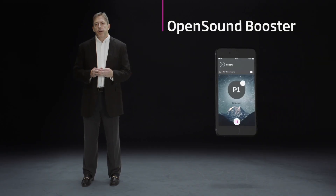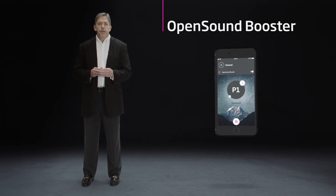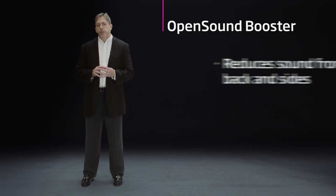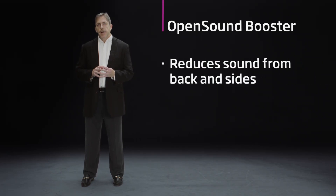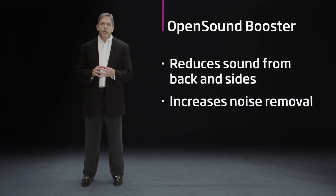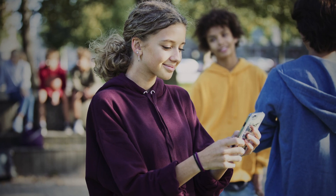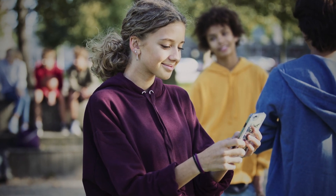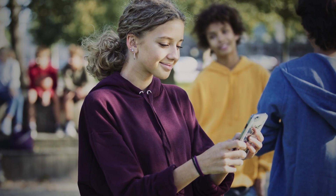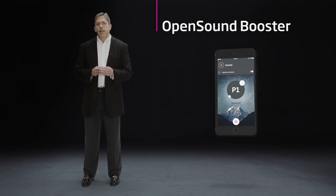For those situations, we created OpenSound Booster. OpenSound Booster is activated via a simple button push on the Oticon On app. Once activated, OpenSound Booster will be more aggressive about reducing sounds coming from the backs and sides, and will allow the noise removal function to attack noise coming from all around the child in a more aggressive manner. Once the situation becomes more typical again, the OpenSound Booster can be deactivated again with a very simple button push on the Oticon On app. OpenSound Booster allows us to take the benefits of OpenSound Navigator to a new level.